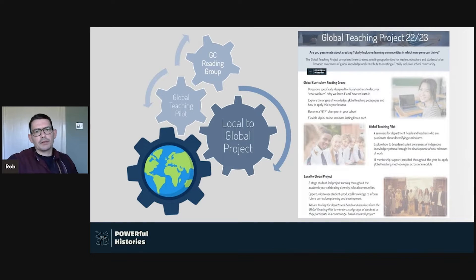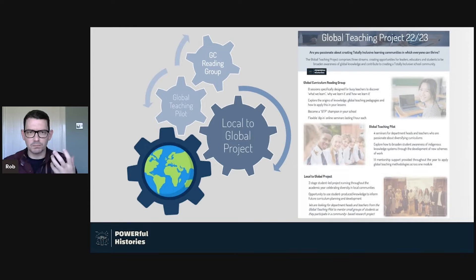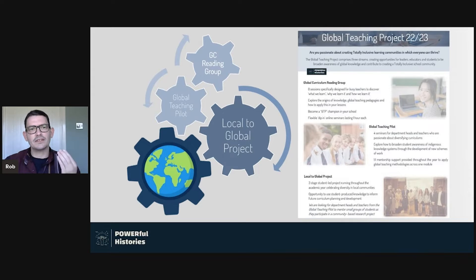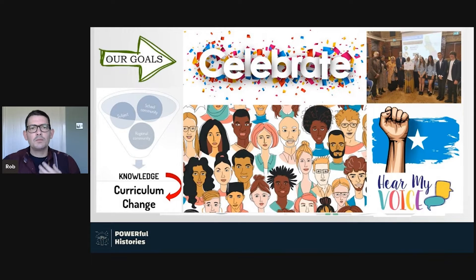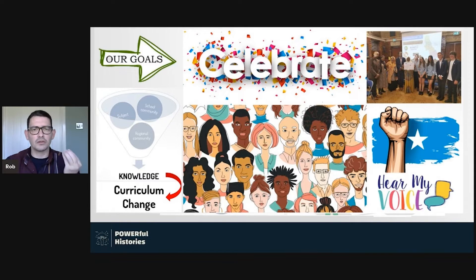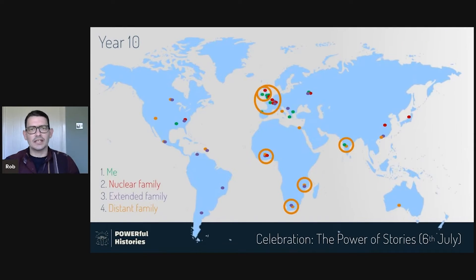Let me share a bit more about the three components of the local-to-global project. Everything we do moving forward should be led by young people and students, with teachers supporting and facilitating that. We want to create curriculums which are responsive and reflect the lived realities and experiences of the worlds that young people live in — ultimately celebrating stories that haven't featured in curriculums today.